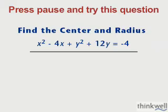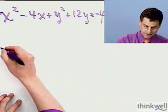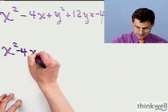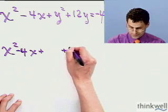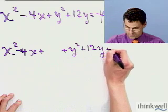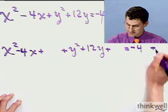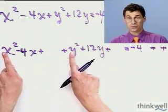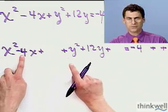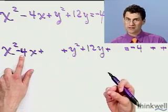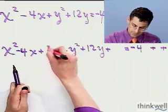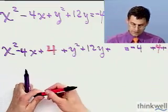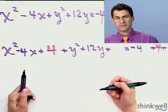We have to do some completing the square here. I already have the constant on the right-hand side, which is good. So I write this out as x squared minus 4x plus blank, plus y squared plus 12y plus blank, equals minus 4 plus blank plus blank. The coefficients in front of the squared terms are already 1 — important to check. I take minus 4, take half of it to get minus 2, square it, and get 4. I add 4 to both sides. Then for 12, half is 6, squared is 36.